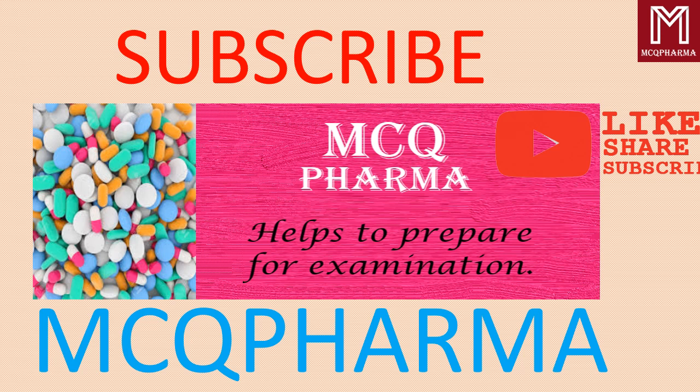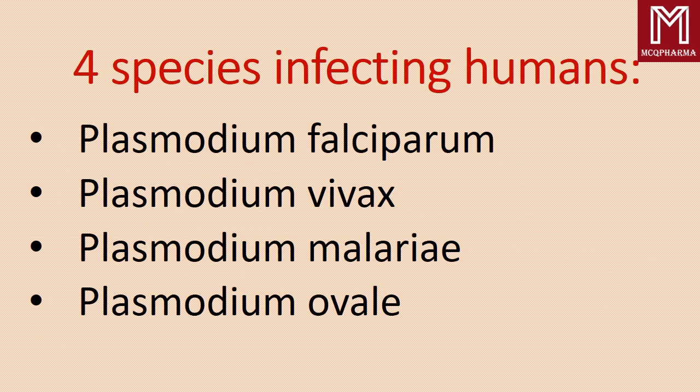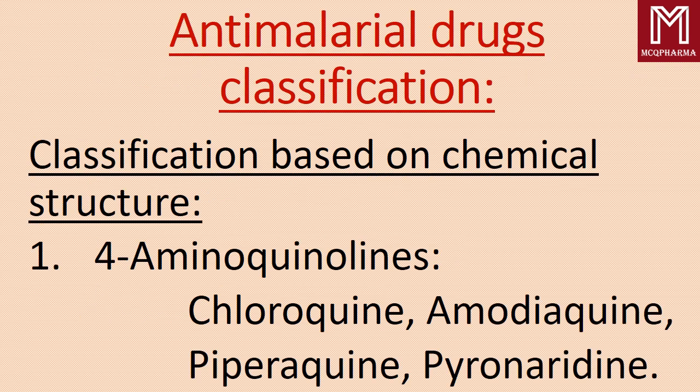Malaria is an acute infectious disease caused by Plasmodium species of protozoan parasite. It is transmitted to humans by the female Anopheles mosquito. The following are the four species of parasite infecting humans: Plasmodium falciparum, Plasmodium vivax, Plasmodium malariae, and Plasmodium ovale.